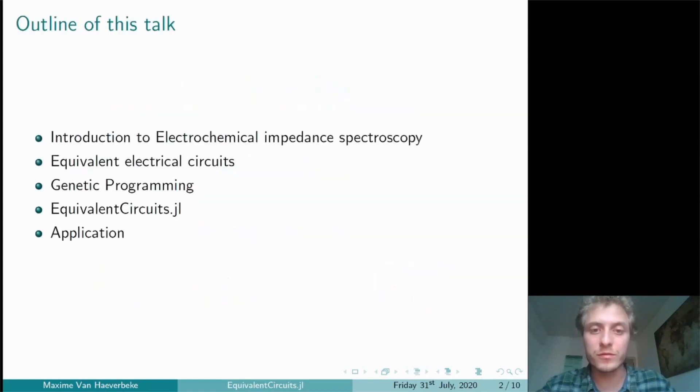After briefly introducing this technique, I will discuss equivalent electrical circuits, which are currently the standard tools used to analyze data originating from electrochemical impedance spectroscopy experiments. Then I'm going to go over the genetic programming algorithm and how it can be applied in the context of finding appropriate equivalent electrical circuits for a given electrochemical system. Finally, I'm going to discuss an example application to illustrate the module.